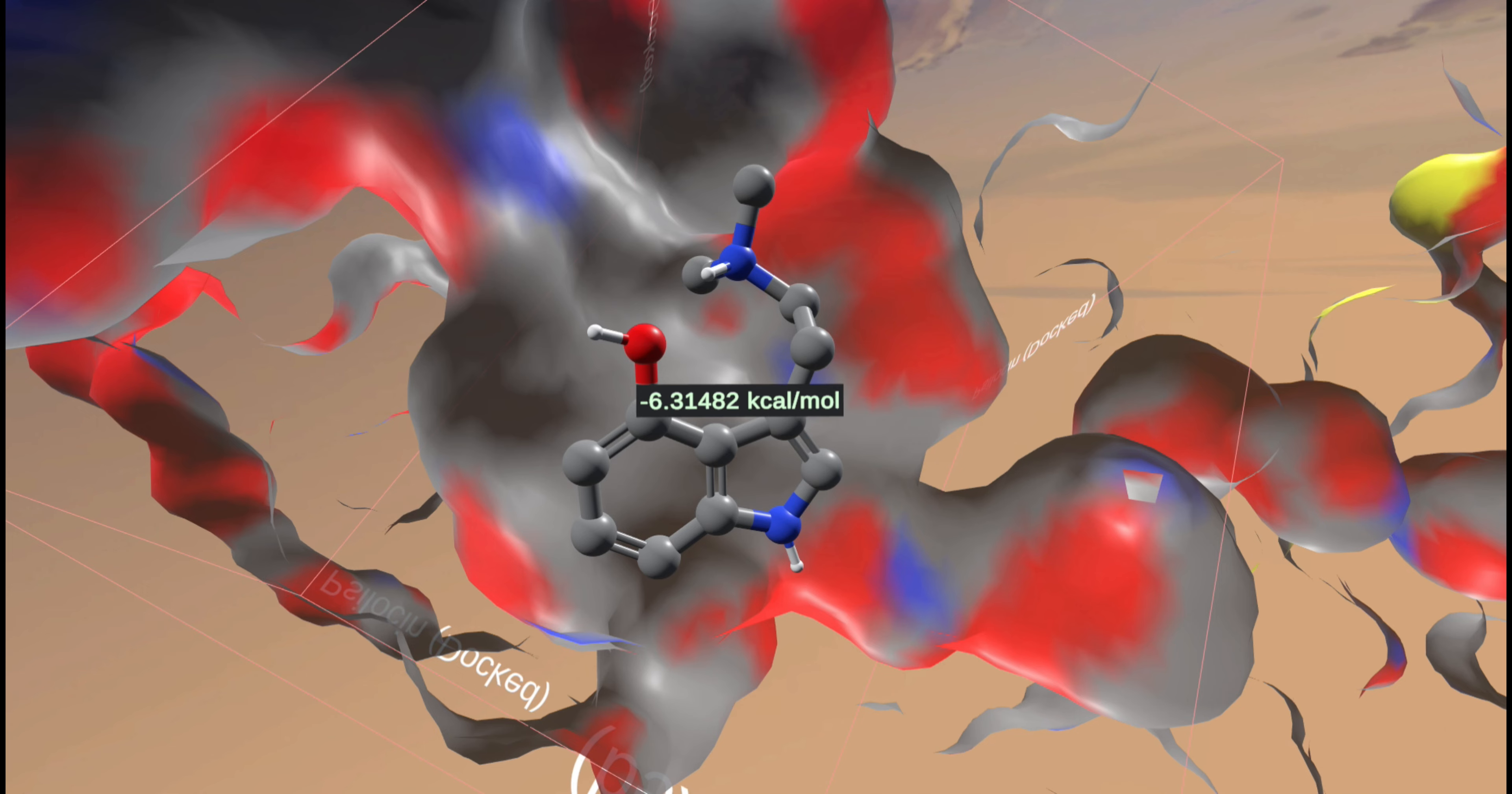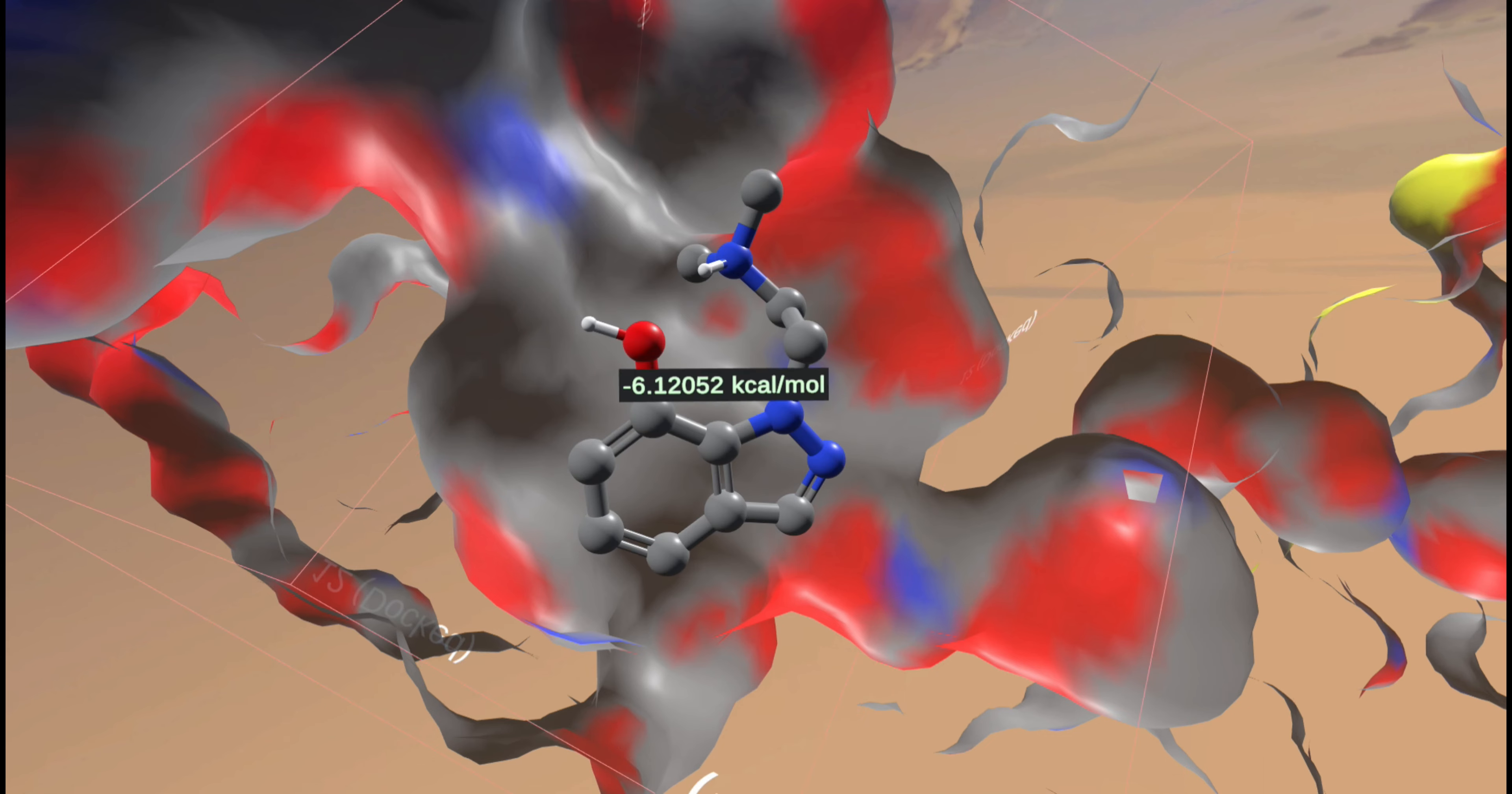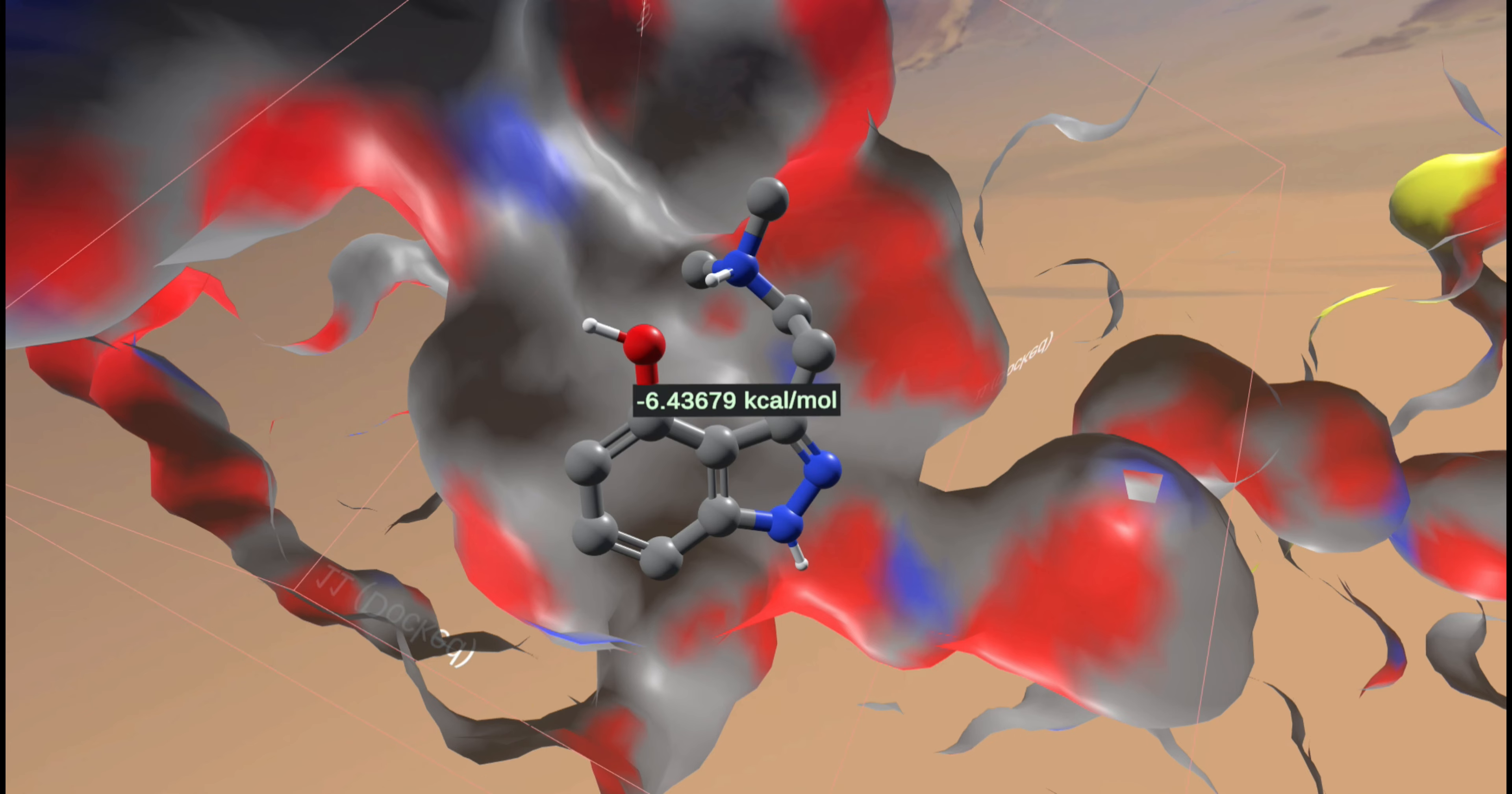So as you can see, psilocin has a glide score of negative 6.31. But what if we wanted to see a ligand that has a better glide score, which would loosely equate to better binding affinity. So looking for something higher than 6.31. This is actually the only bioisostere that I found of psilocin that has higher affinity than psilocin itself.